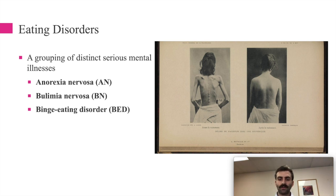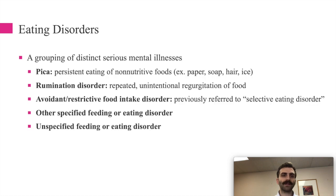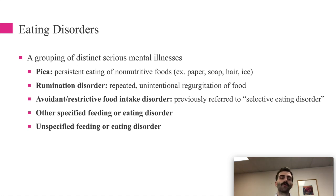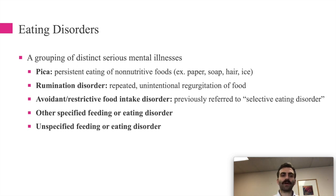Eating disorder is the overarching term. The three major ones we'll focus on are anorexia nervosa, bulimia nervosa, and binge eating disorder. There are additional eating disorders: pica — persistent eating of non-nutritive foods like paper, soap, hair, or ice; rumination disorder — repeated unintentional regurgitation of food; avoidant restrictive food intake disorder — a severe selective eating disorder where someone's accepted foods are so narrow they may not get proper nutrients; and catch-all categories like other specified or unspecified feeding or eating disorder.